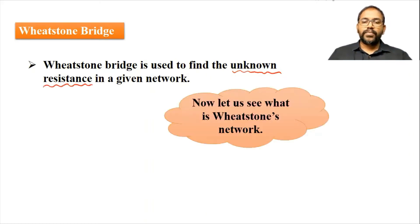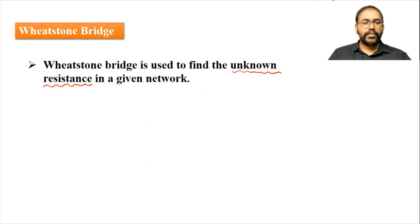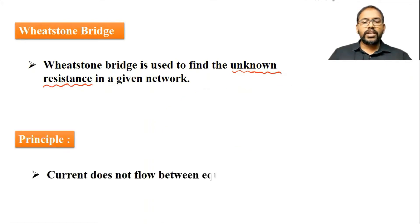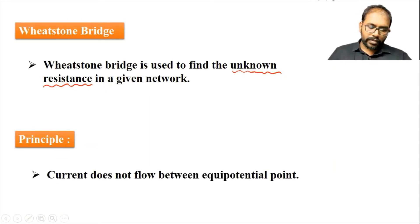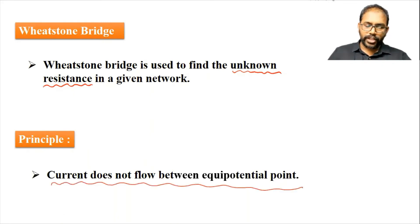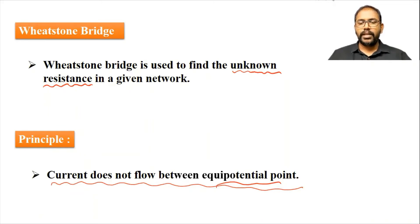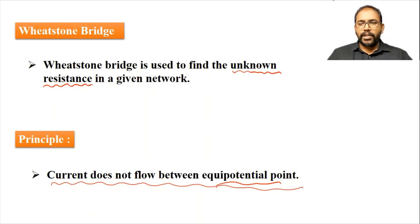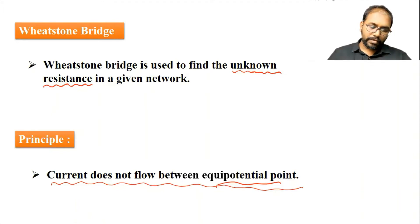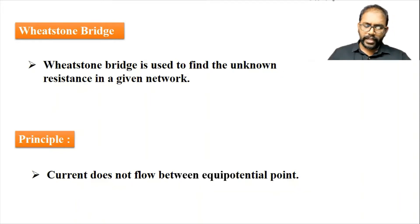Now let's see what Wheatstone's network is. The principle here is: current does not flow between equipotential points. You know that water flows from higher height to lower height; similarly, current also flows from higher potential to lower potential. If the potential of two points is the same, then current does not flow between them. That is the principle.